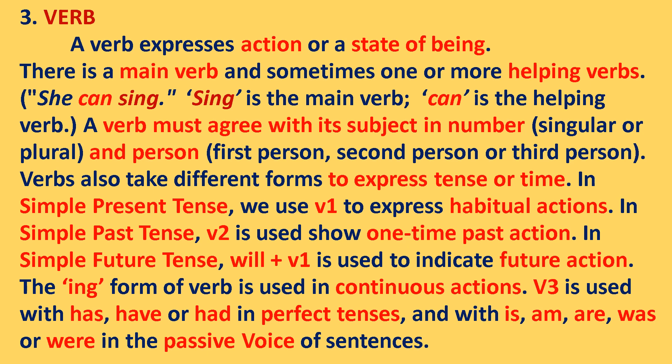Verbs also take different forms to express tense or time. In simple present tense, we use V1 to express habitual actions. In simple past tense, V2 is used to show one-time past action. In simple future tense, will plus V1 is used to indicate future action. The -ing form of a verb is used in continuous actions. V3 is used with has, have, or had in perfect tense, and with is, am, are, was, or were in the passive voice of sentences.